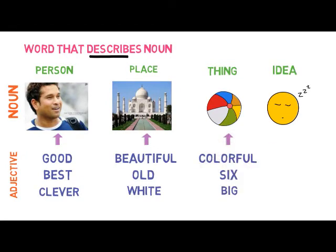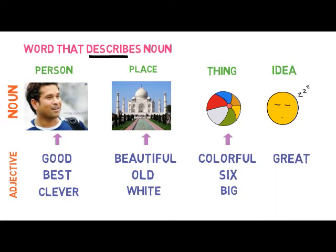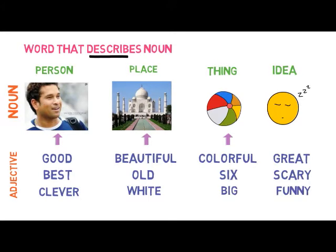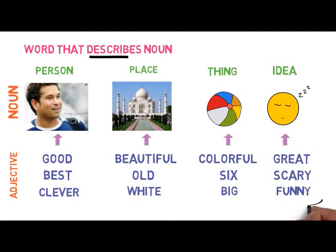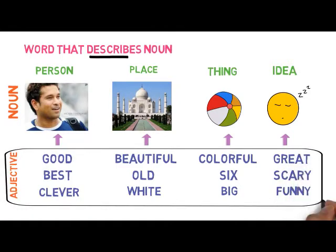Let's move to the idea. What types of ideas can you describe? If I say I got a great dream, I got a scary dream, or I got a funny dream, then great, scary, and funny are the words that describe the idea of dreams. These are the words that describe nouns, giving more information about them, and they are called adjectives.